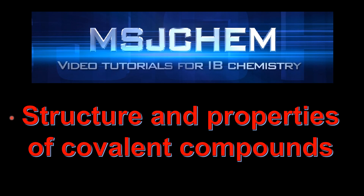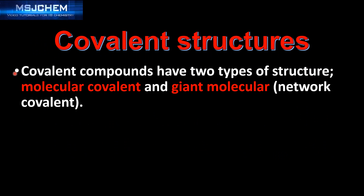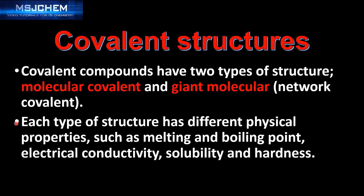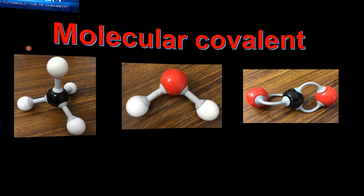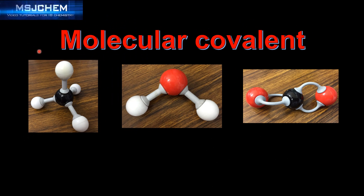This is MSJChem and in this video we look at structure and properties of covalent compounds. Covalent compounds have two types of structure: molecular covalent and giant molecular, which is sometimes called network covalent. Each type of structure has different physical properties such as melting and boiling point, electrical conductivity, solubility, and hardness.